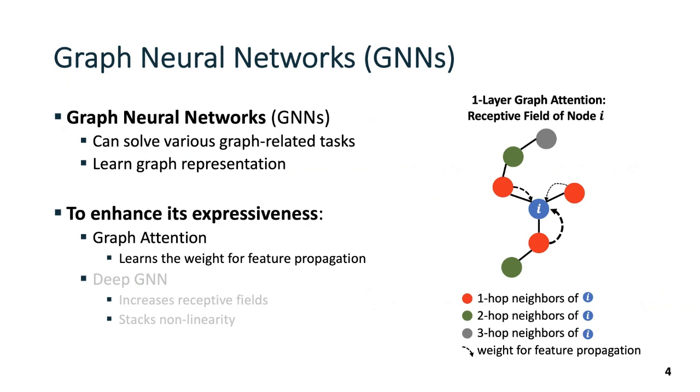To solve various downstream tasks on graphs, we can use GNNs. GNNs learn graph representation with neural networks. To make GNN learn better graph representation, we need to enhance its expressiveness. We introduce two techniques that do so. The first is graph attention. It learns the weights for feature propagation. In the figure, we see that to learn representation of node i, one layer of graph attention learns the weights of different neighbors for feature propagation.